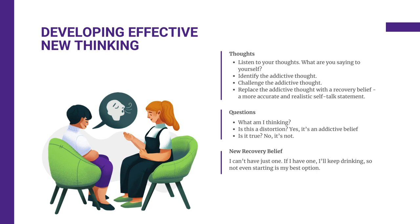After we identify, we then want to challenge our negative thoughts — actively questioning the accuracy and validity of those thoughts and encouraging individuals to consider alternative perspectives and evidence that contradicts their negative thinking. Then we move into cognitive restructuring, replacing distorted thoughts with more balanced, rational, and positive alternatives, consciously reshaping thought patterns to promote healthier cognitive processes. An example of a restructured thought might be: 'While I've made significant progress in my recovery, I recognize that staying clean is an ongoing commitment. It's essential to acknowledge the potential risks associated with using even small amounts of substances. I've worked so hard to build a sober and fulfilling life, and I will continue to prioritize my well-being. Instead of seeking temporary rewards through substances, I'll focus on healthy and sustainable ways to treat myself and celebrate my achievements.'